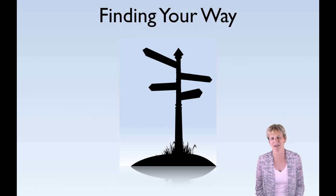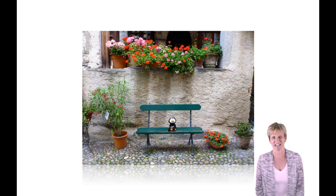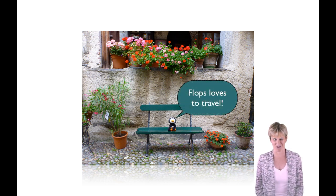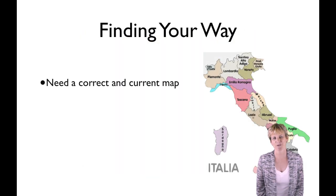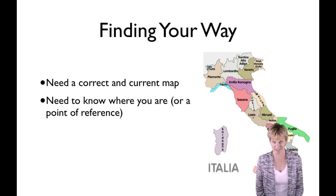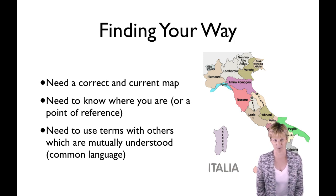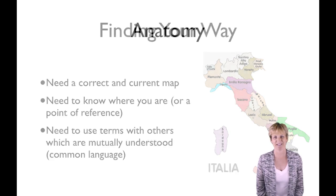Speaking of where things are, anatomy is not very different from traveling, so you want to approach anatomy like you approach any kind of journey. When you travel, just like when you study anatomy, you need three things. The first thing you need is a current and correct map. The next thing is a point of reference so that when you get directions or look at the map things actually make sense — you have to know where you are. And the third thing is you need a common language in order to be able to read the map or understand people if you ask for help. Anatomy is exactly the same.